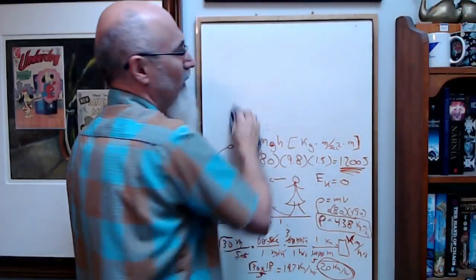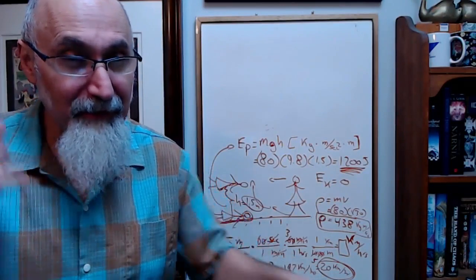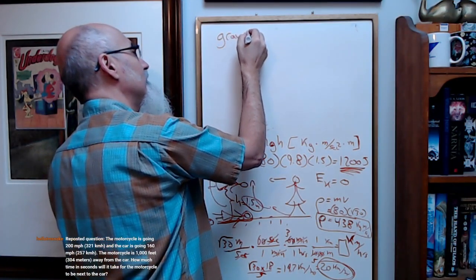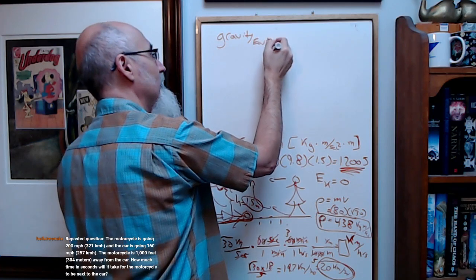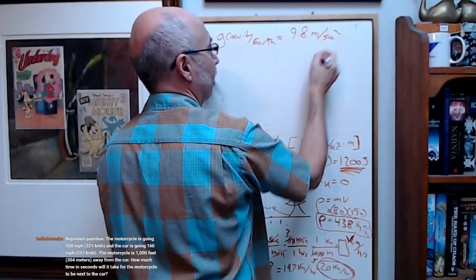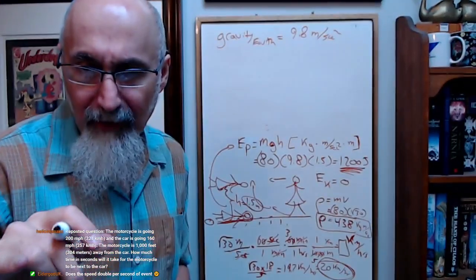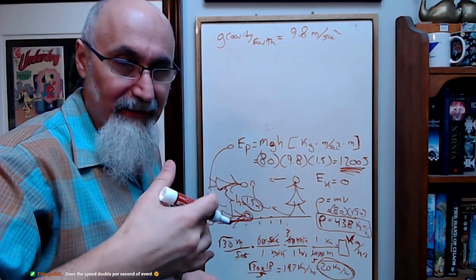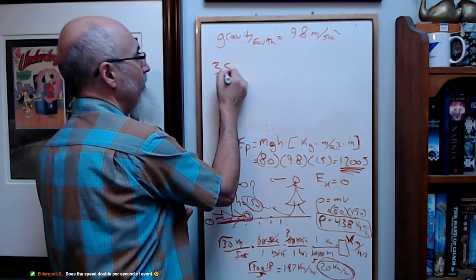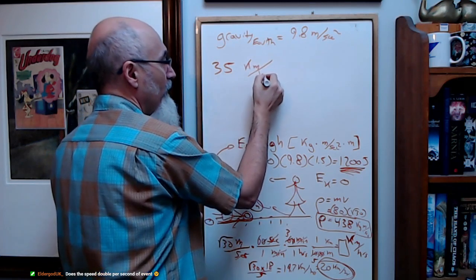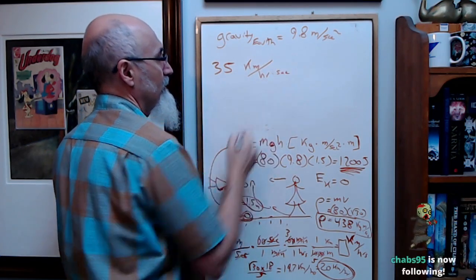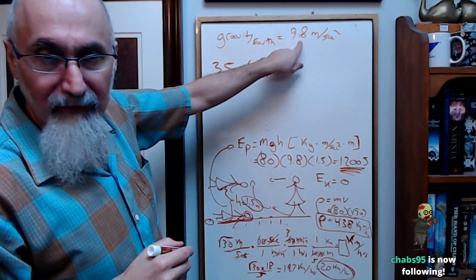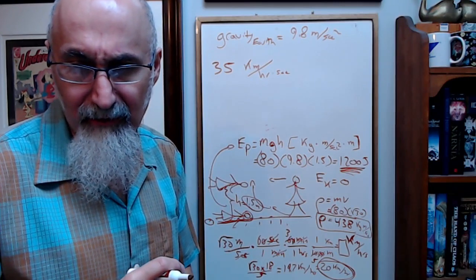Gravity on Earth is 9.8 meters per second squared. The number Elder God pulled out was 35 kilometers per hour for each second that passes, so it's per hour per second. We need to convert 35 kilometers per hour to meters per second to get a comparison of what it would be in gravity, in g's.